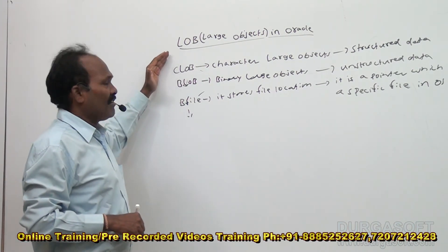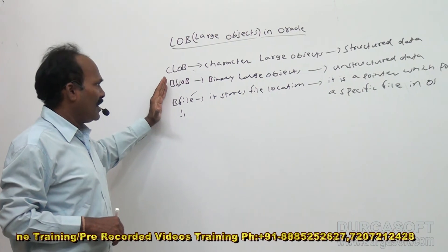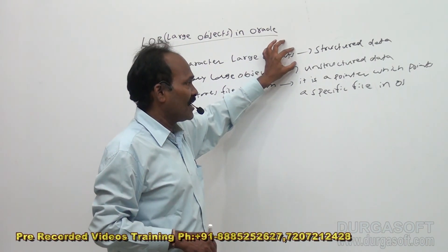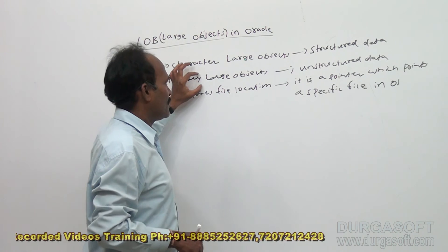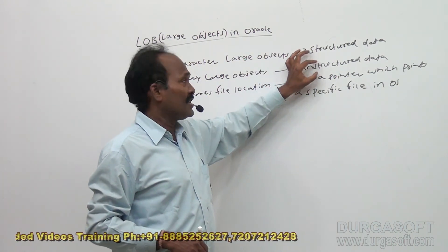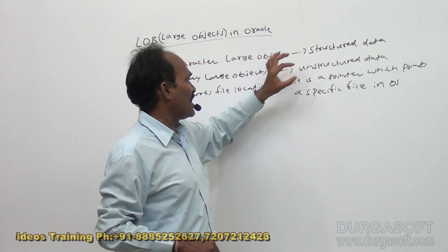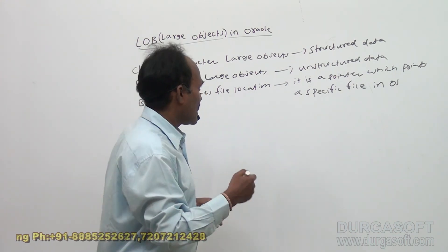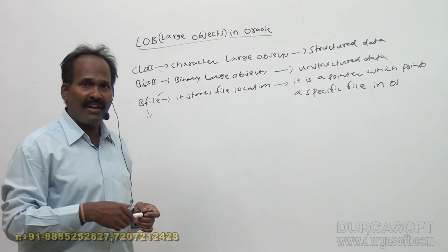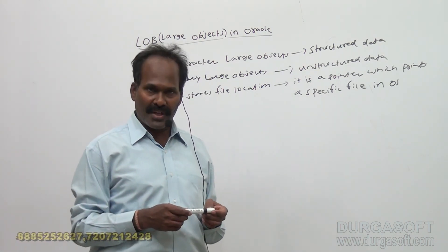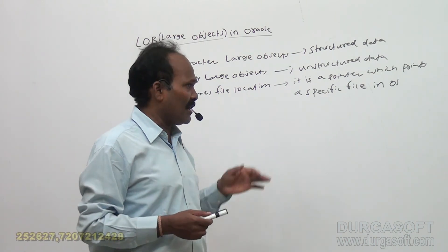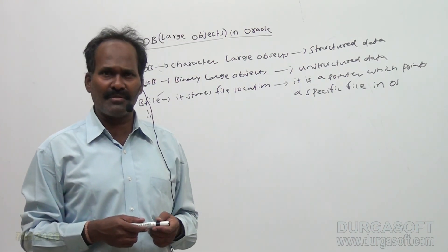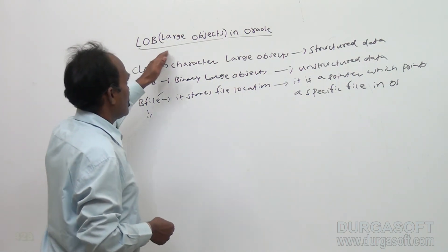So to summarize, under the LOB category we have CLOB, BLOB, and B File. CLOB is for storing structured data. BLOB is for storing unstructured data. B File is just like a pointer which points to a specific file stored in the operating system. Since that file is stored at the OS level, there is less security compared to CLOB and BLOB. This is a brief introduction to large objects in Oracle.